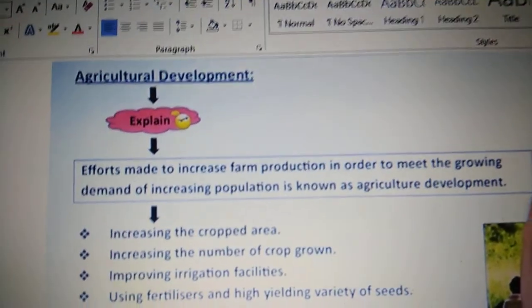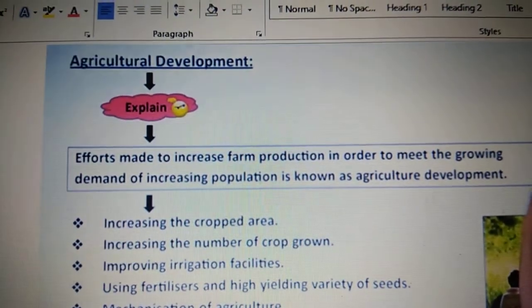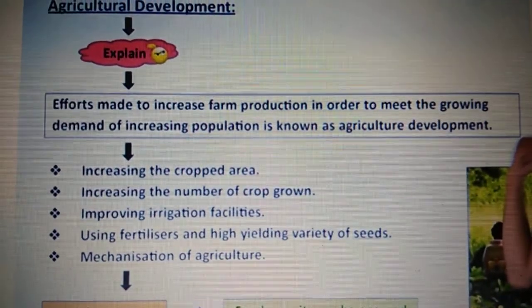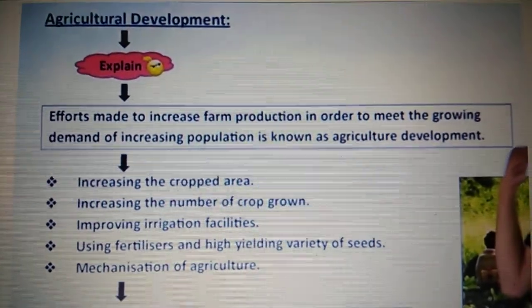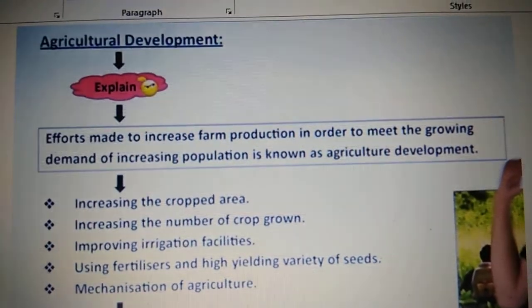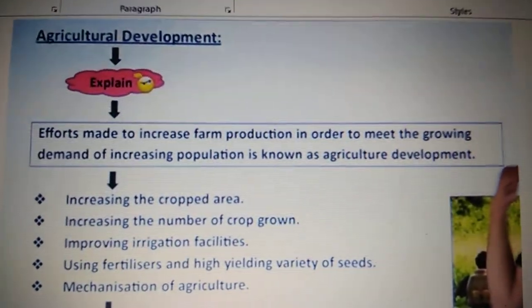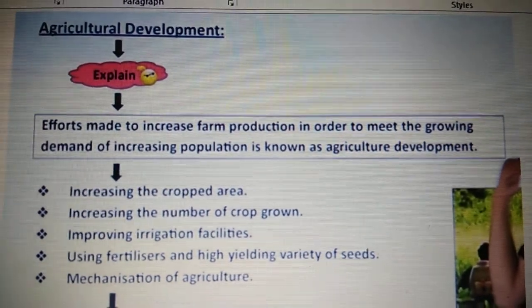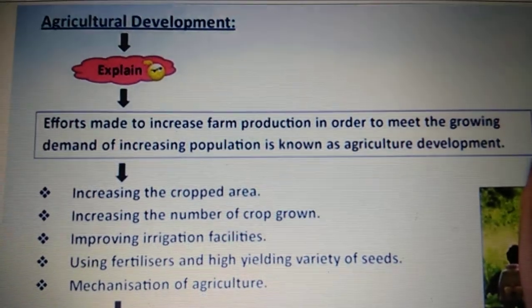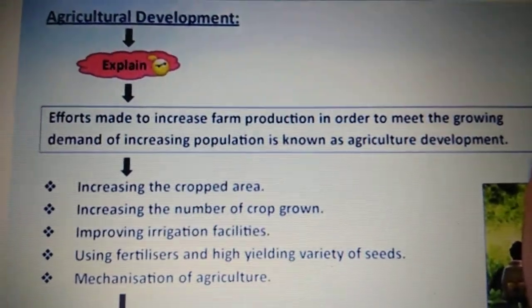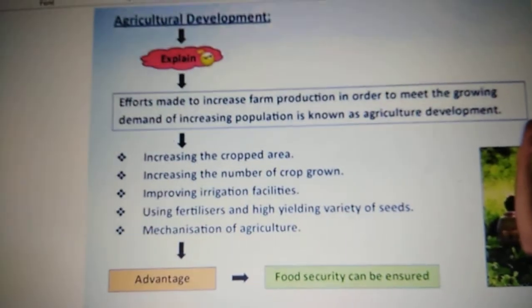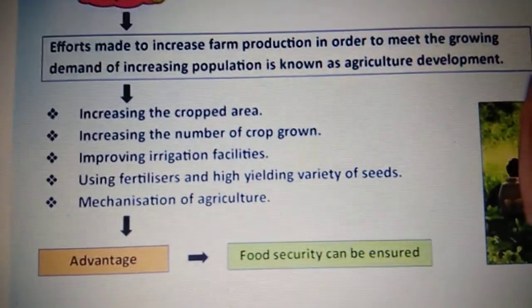We go ahead to our next topic: agricultural development. In India, two-thirds of our population are dependent on agriculture, and in the world it is 50 percent. So efforts must be made to develop agriculture. Agricultural development is the efforts to increase farm production in order to meet the growing demands of the increasing population. We need to develop it properly so that we can get more and more crops to feed the population all over the world.